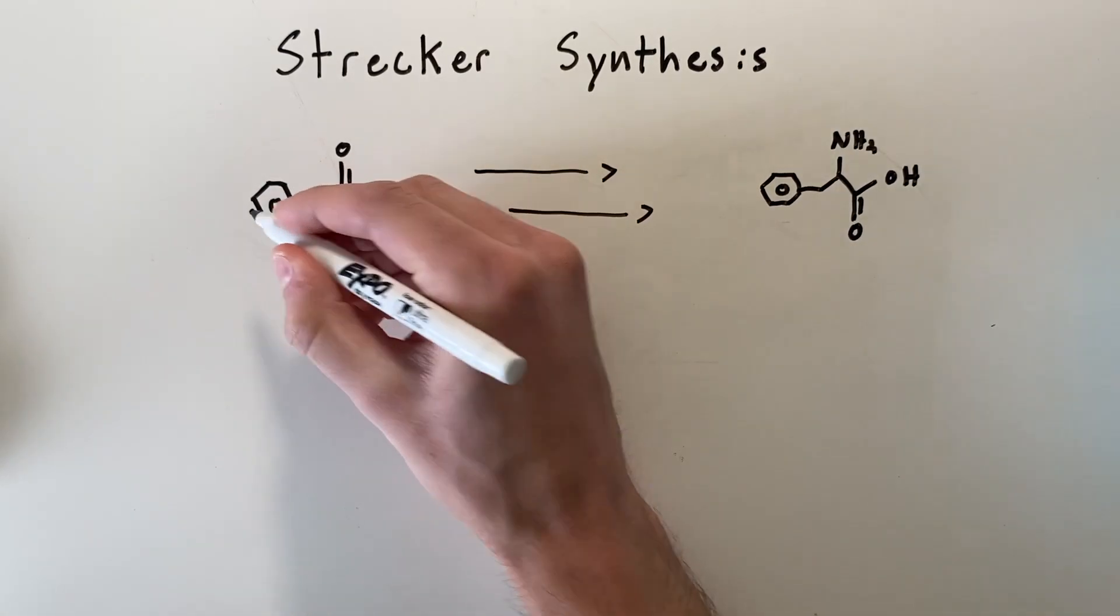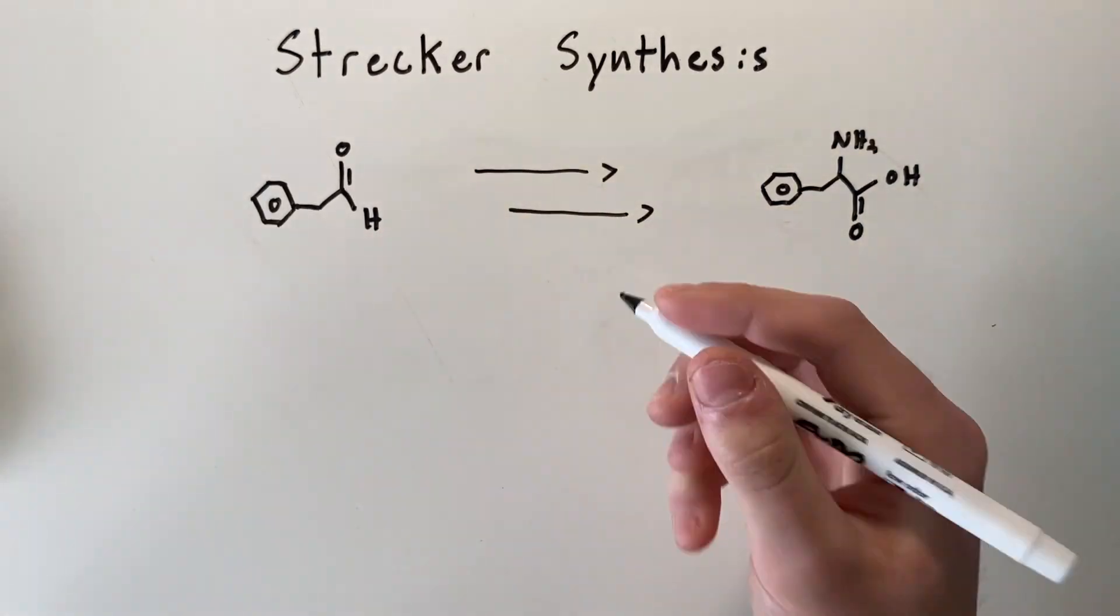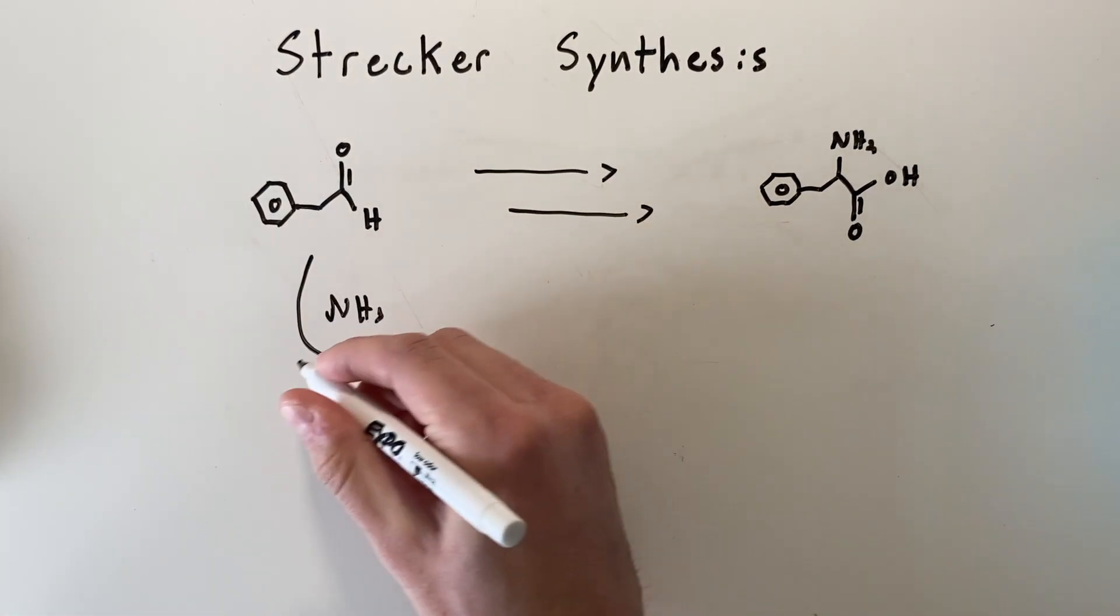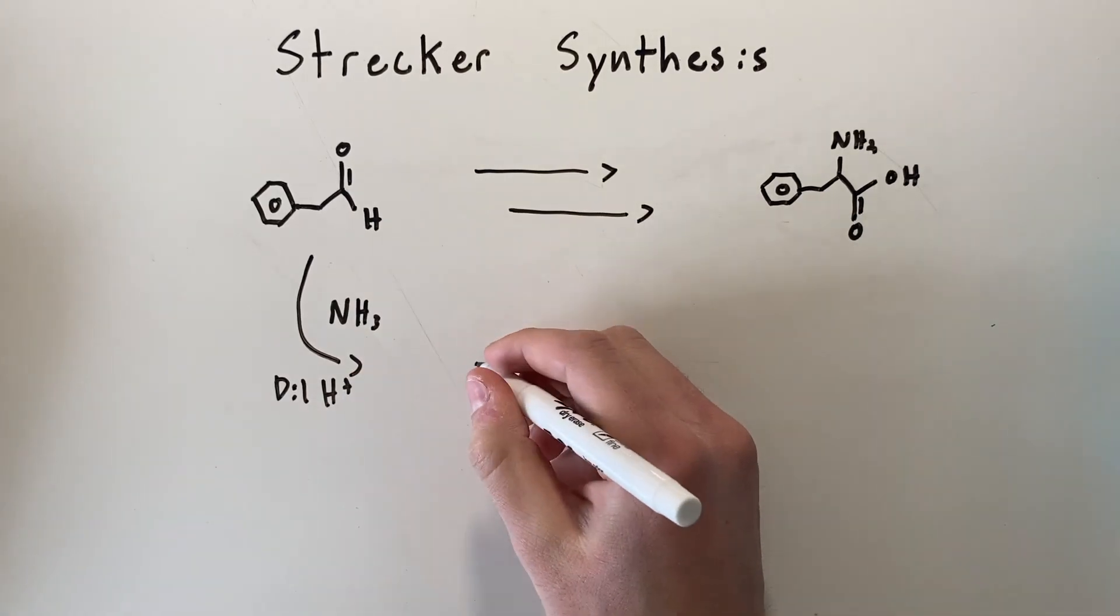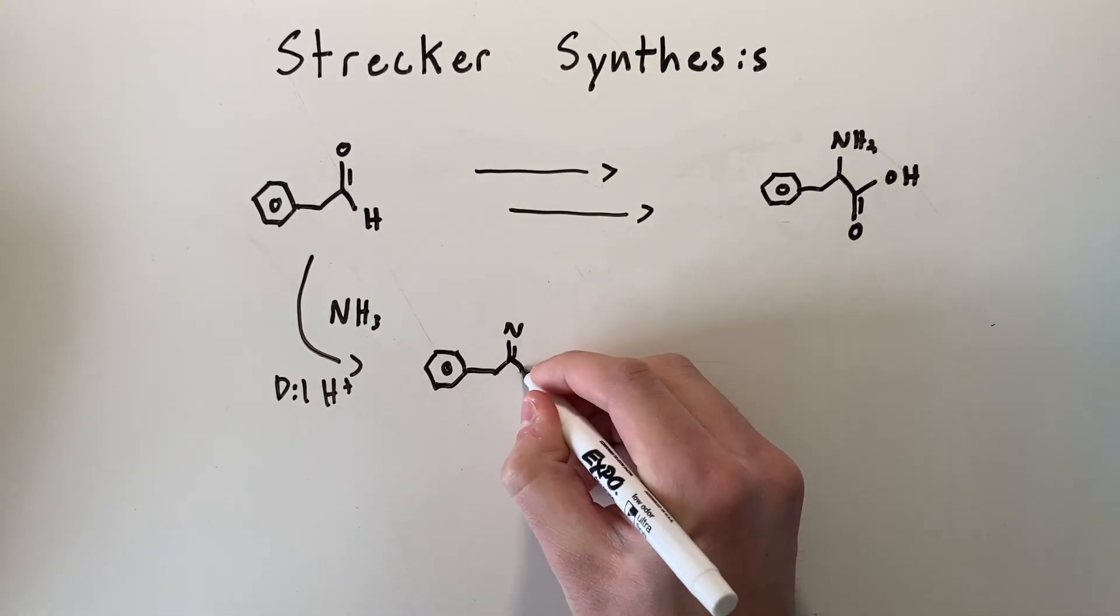The first step in the Strecker synthesis, we're going to add ammonia, NH₃, and dilute acid. And we'll end up with an imine product.